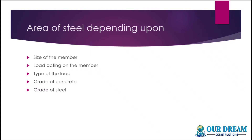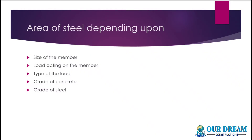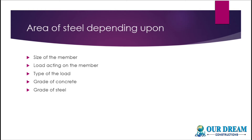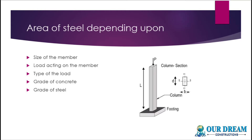How to calculate the number of reinforcement bars? Column — vertical member. You can use the area of steel. If you have the number of steel bars, you will do it differently. The first thing is the size of the member. If you have the 3D column, there is a number of reinforcement bars. The area of steel is the size of a member, which is the load-acting member.